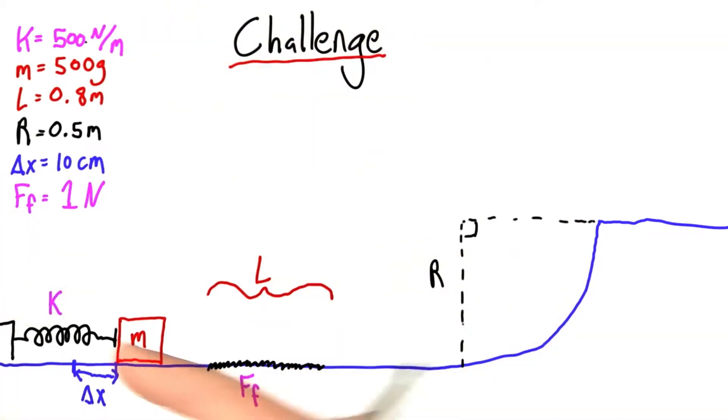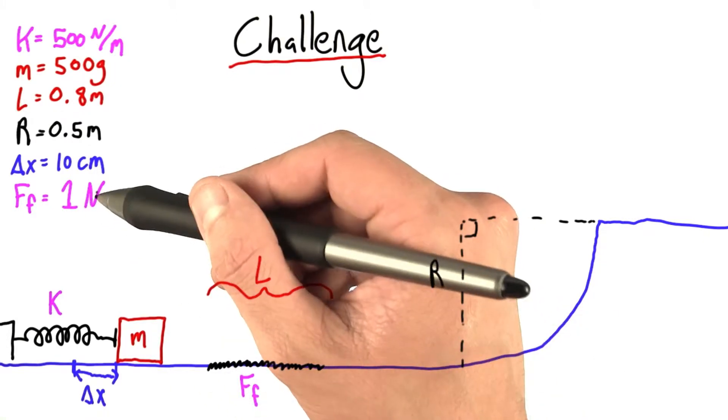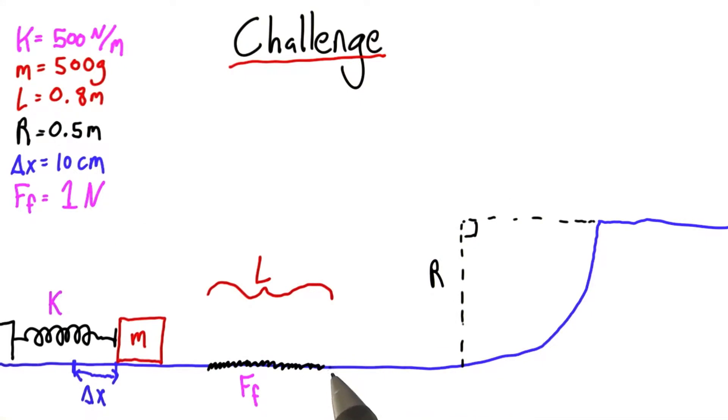When I release this mass, it's going to go across this frictionless blue area, over this rough surface where there is some force of friction, force equal to 1 newton, back towards this frictionless area, up this curved ramp.